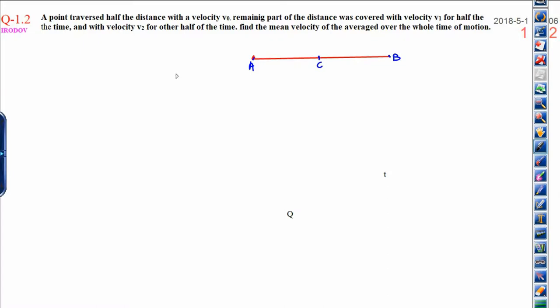Dear students, today I am going to one more important concept. Here is question number 1.2. I hope this question will help you a lot in your future. Now, let me read the question. A point traversed half the distance with velocity v0. Let this is the half distance, I am just taking this half distance and its velocity in this manner you can write v1.